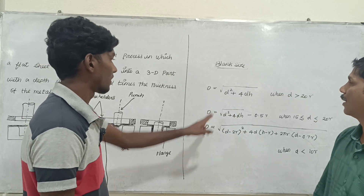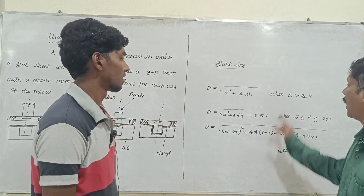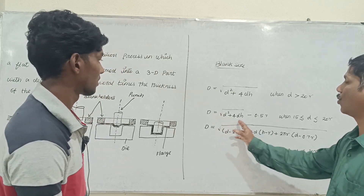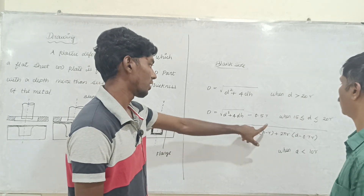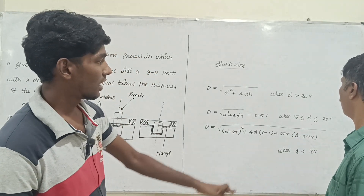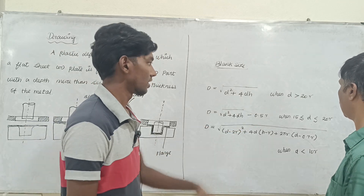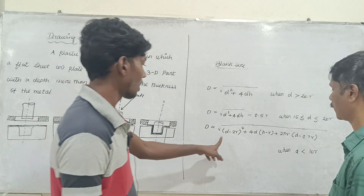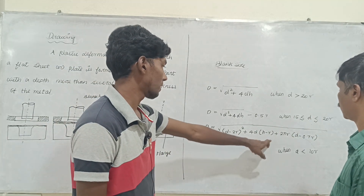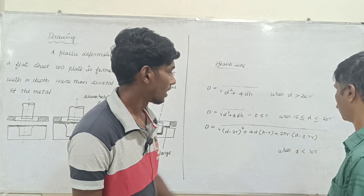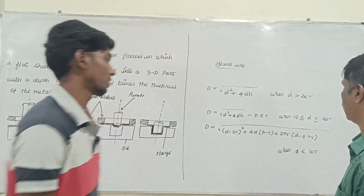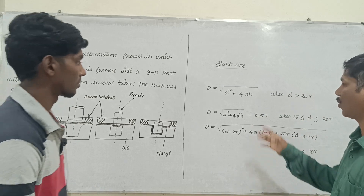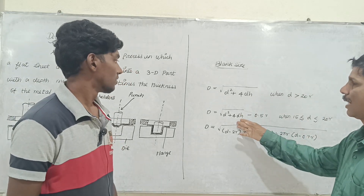You can write the blank formula as D = root of (d² + 4dh), when d is greater than 20r. D = root of (d² + 4dh − 0.5r), when 15r < d ≤ 20r. D = root of ((d − 2r)² + 4dh − r) + (2/r)(d − 0.7r), when d < 10r.